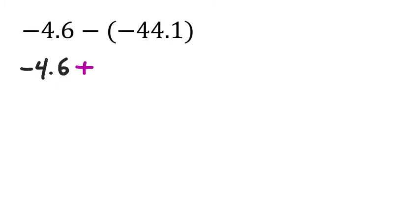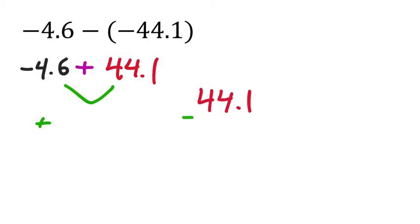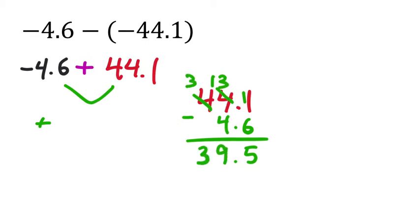Here's a subtraction problem. I'll use keep-change-change: keep negative 4.6 as negative 4.6, change subtraction to addition, and change negative 44.1 to positive 44.1. So negative 4.6 plus 44.1. The bigger value is positive, so the answer is positive. Subtract the smaller from the bigger: 44.1 minus 4.6. Borrowing as needed: 11 minus 6 is 5; 13 minus 4 is 9; drop the 3. Result: 39.5.